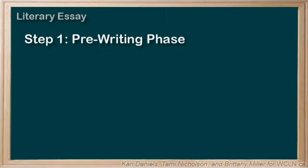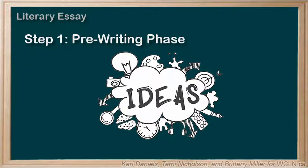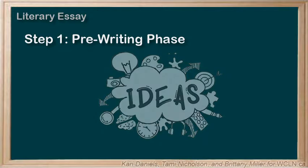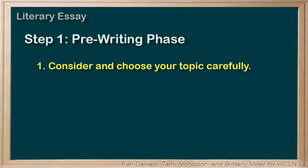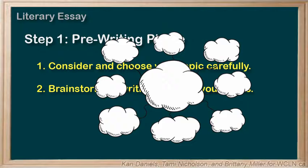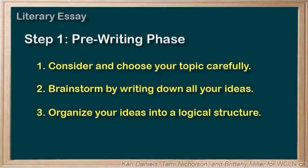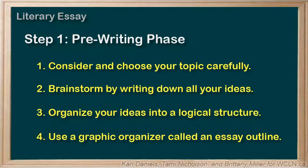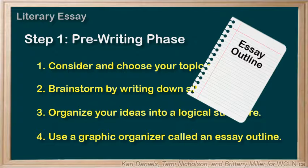Step 1 is your pre-writing phase. This step is very important as it is where you will generate your ideas and organize them into a logical structure. First, consider and choose your topic carefully. Second, brainstorm by writing down all your ideas about your topic — what is your main idea and how will you prove it? Third, organize your ideas into a logical structure where one supporting point leads logically to the next until you prove your main idea. Fourth, use a graphic organizer called an essay outline.